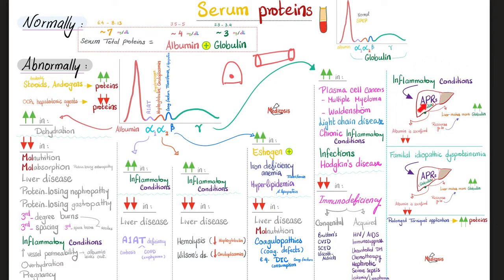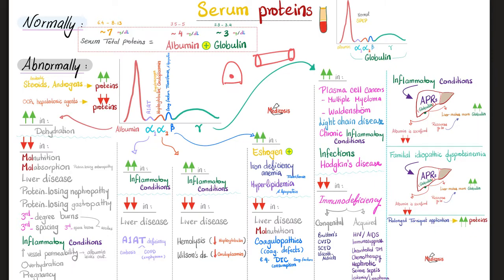Some pearls for the pros: inflammatory conditions increase acute phase reactant globulins from the liver — globulins rise, albumin is sacrificed. Familial idiopathic dysproteinemia is a congenital disease where globulin goes up and albumin goes down. Be very careful when collecting blood samples: applying the tourniquet too long gives a false proteinemia — the lab will report high proteins when the patient is actually normal, because prolonged tourniquet may cause hemolysis and cell breakdown, releasing proteins artificially.